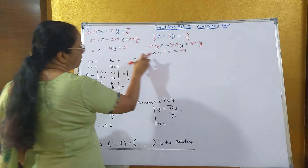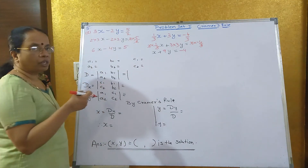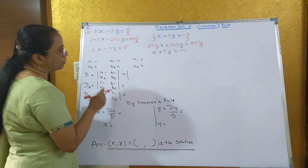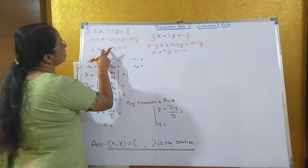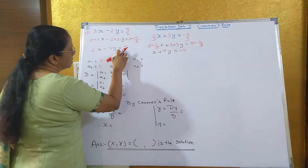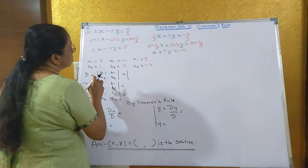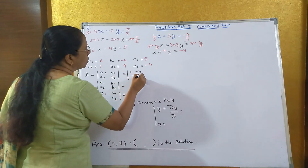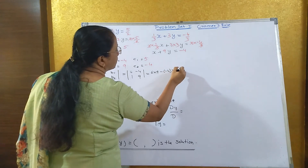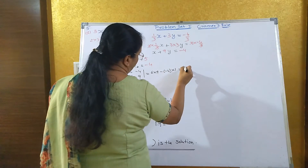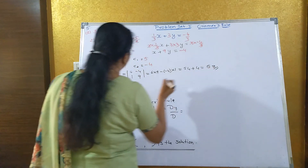So the two equations are: 6x minus 4y equals 5, and x plus 9y equals minus 4. Now identify the values: A1 = 6, A2 = 1, B1 = minus 4, B2 = 9, C1 = 5, C2 = minus 4. The determinant D equals A1·B2 minus B1·A2, that is 6 into 9 minus (minus 4) into 1, which gives 54 plus 4 equals 58.